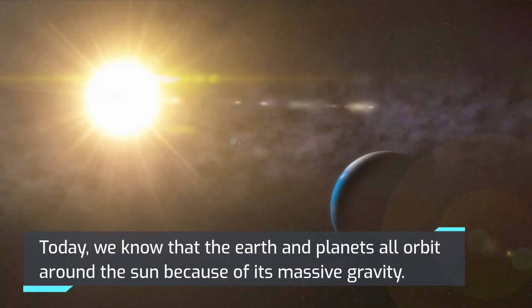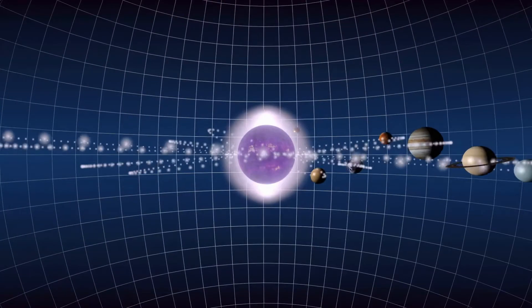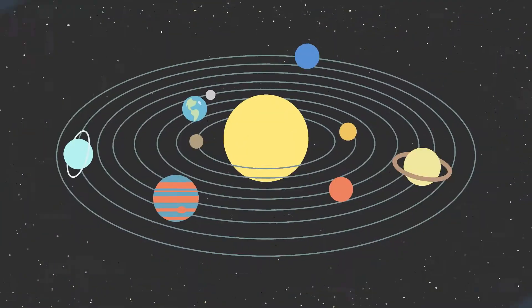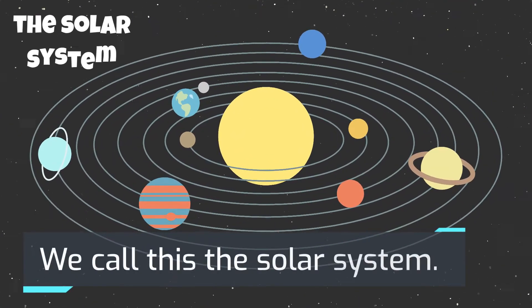Today, we know that the Earth and planets all orbit around the Sun because of its massive gravity. Because of the Sun's gravitational pull, the planets orbit around it. We call this the solar system.